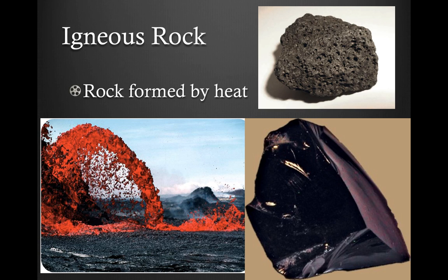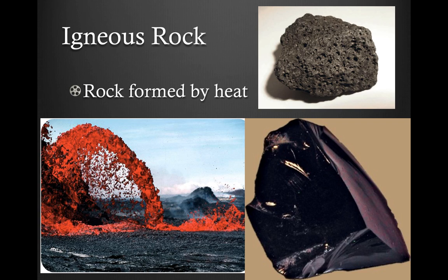Igneous rock is formed by heat — either magma inside the earth or lava coming out of a volcano. Igneous rocks form in one of two ways: slow-forming rocks allow gas and heat to escape, creating pores, like the porous rock in the upper right. The other type cools very quickly, like obsidian, which has no pores, very sharp edges, and is shiny and weighty. The one on top cooled slowly; the one on the bottom right cooled quickly — both are igneous but look different.